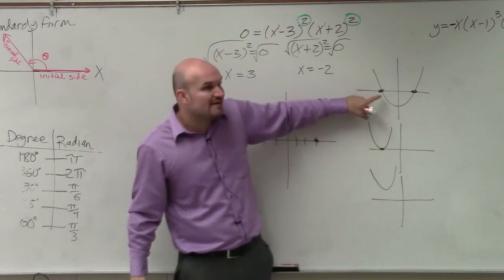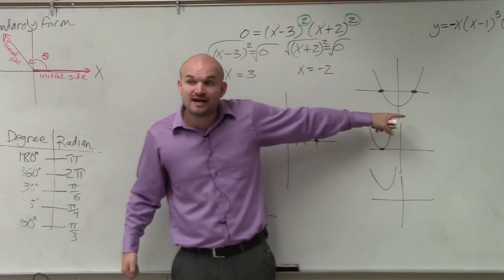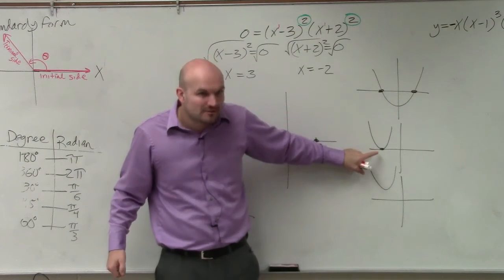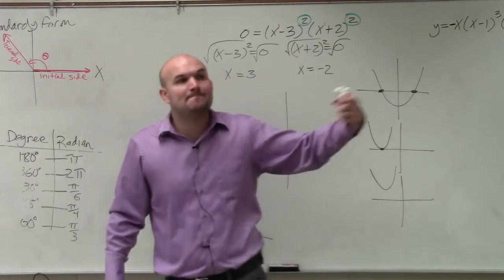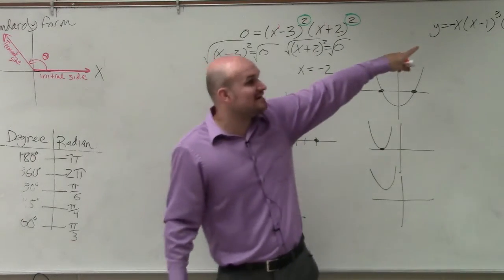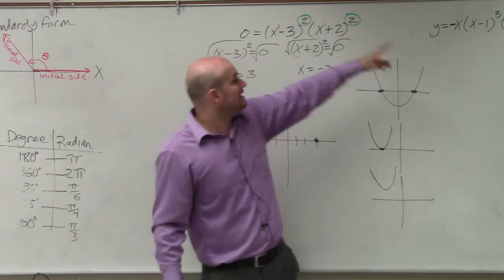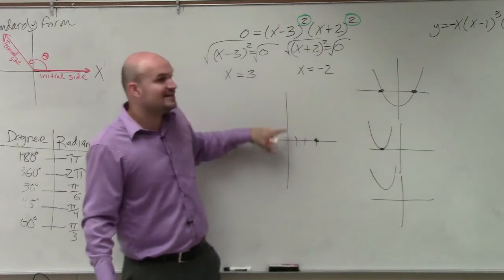Because what happens is, you can have an x-intercept where the graph crosses. You can also have an x-intercept where the graph bounces. And the only way we know it bounces is when the multiplicity is even. So the multiplicity could be raised to a 4. The multiplicity could be raised to a 16. It could also be raised to a 2, which in this case we do.